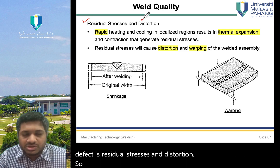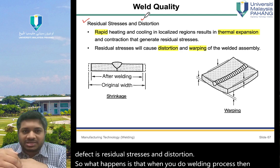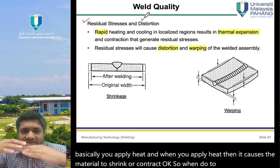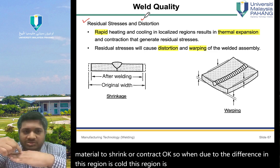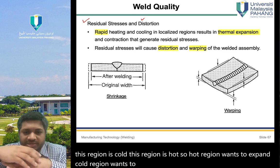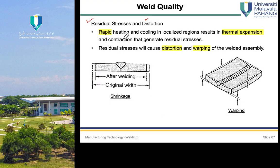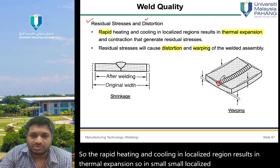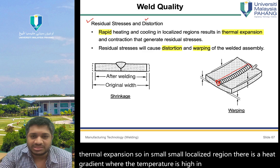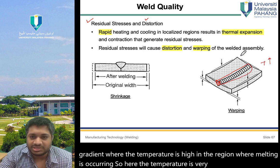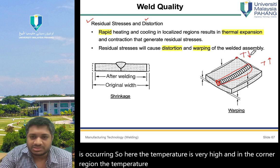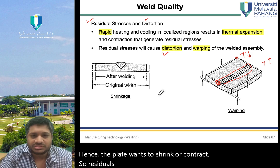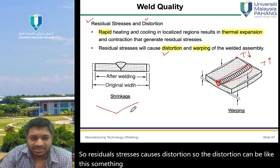The first defect is residual stresses and distortion. When you do the welding process, you apply heat, which causes the material to shrink or contract. Due to the difference in heat, the hot region wants to expand while the cold region wants to contract. Rapid heating and cooling in a localized region results in thermal expansion, and residual stresses cause distortion.